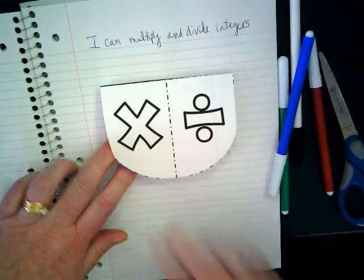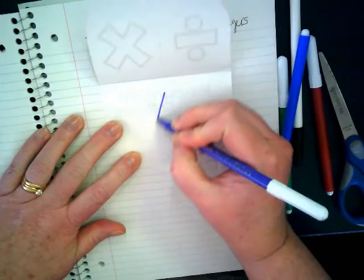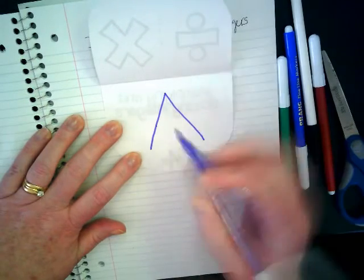So I have some different colors here. On the inside, I want you to draw a triangle. You should take up most of the space in here. Triangle like this.